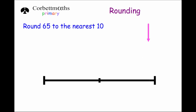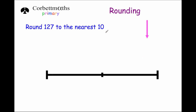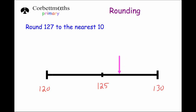Our next question asks us to round 127 to the nearest ten. The multiple of ten just below 127 is 120, and above it is 130. Midway between those two numbers is 125. On the number line, 127 would be around about here, which means 127 is closer to 130 than it is to 120. So the answer is 130.